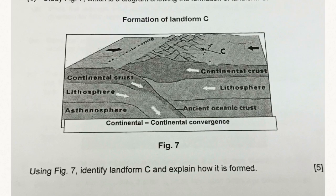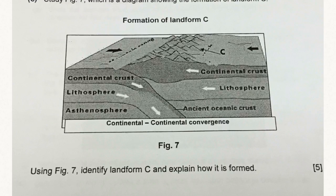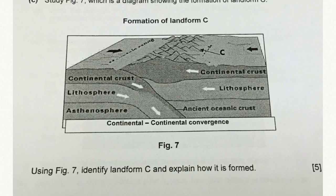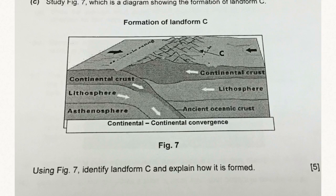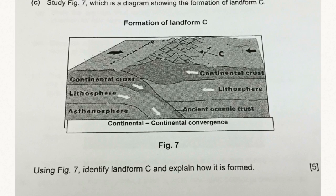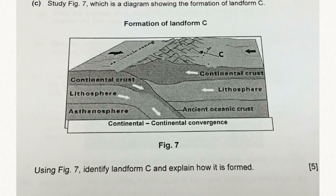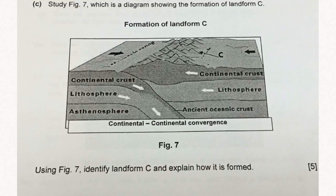Moving on, this is the second question on plate tectonics — a very common one. This is continental-continental convergence. What is shown in the diagram here is basically the formation of fold mountains. Form C is a series of fold mountains. This diagram is actually one lifted from the textbook, and it shows an ancient oceanic plate subducting.